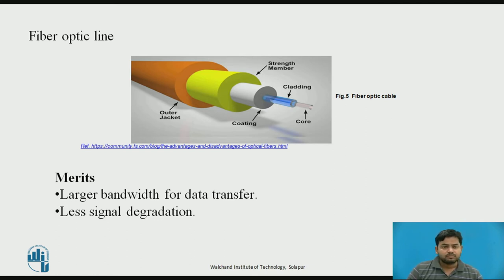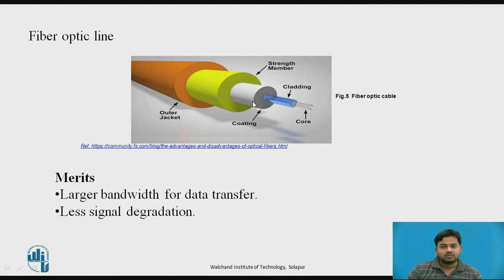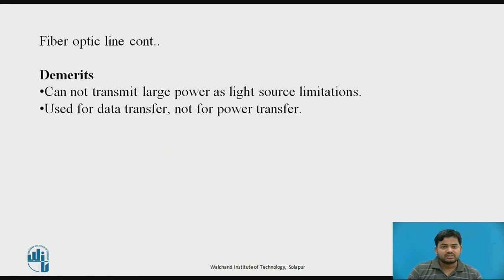Fiber optic transmission lines have different applications. In fiber optics, light is transmitted — data is carried with the help of light through the core, while the cladding surrounds it. Light is trapped and travels over long distances. The advantages include low loss and suitability for long distances. The disadvantage is that large power cannot be transmitted using a fiber optic transmission line.